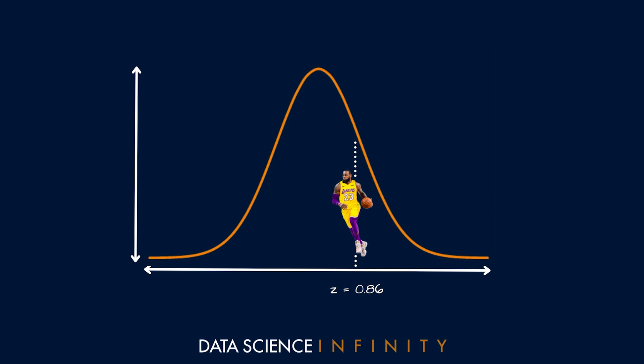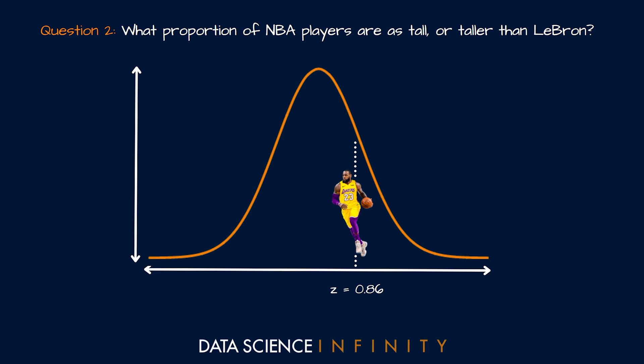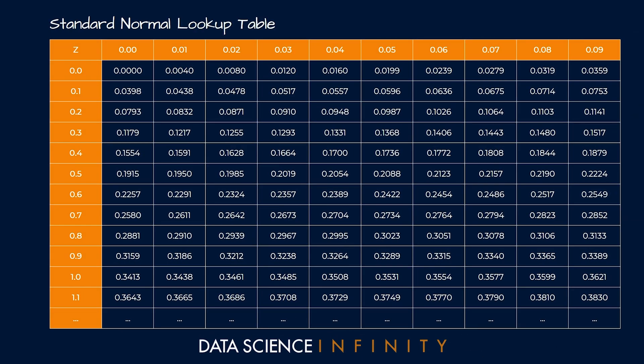We're halfway there. Let's take on that second question: what proportion of NBA players are as tall or taller than LeBron? Looking at the plot on screen, this is represented by the area to the right of LeBron's height. Our task is to figure out how big that area is, using the probability density function for our distribution. For ease, we'll use a readily available lookup table called the standard normal lookup table, which contains all of the information that we need.